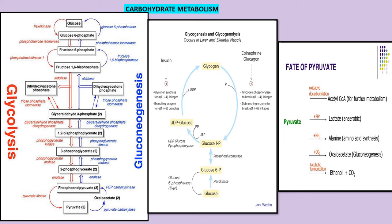Glycolysis is a cytoplasmic pathway used by all cells to obtain energy from glucose. One glucose molecule is converted to two pyruvate molecules, yielding two ATP and two NADH. When oxygen is present, NADH is delivered to the electron transport chain in the mitochondria to generate more ATP. Under anaerobic conditions, pyruvate is converted to lactate.